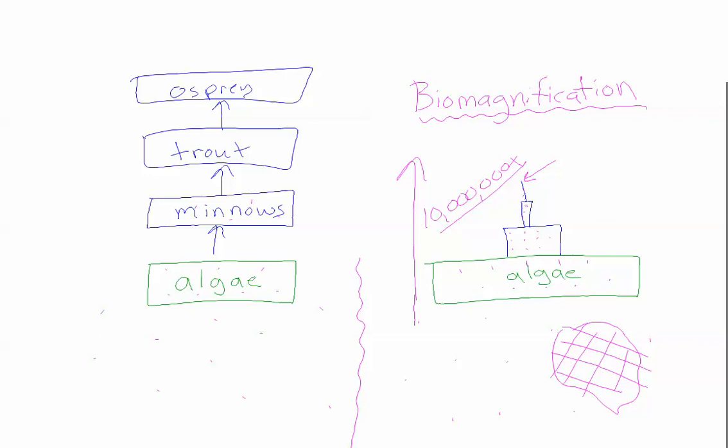And number two, as we spray DDT into a general area, it enters food chains, it enters the ecosystems, and becomes more and more concentrated as it moves up the food chain.